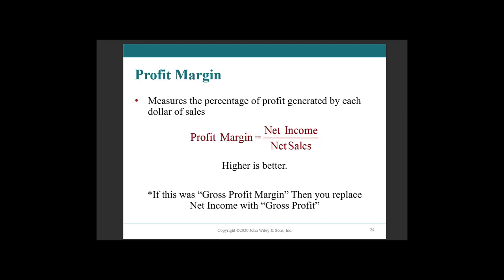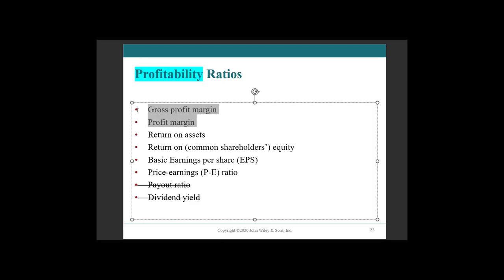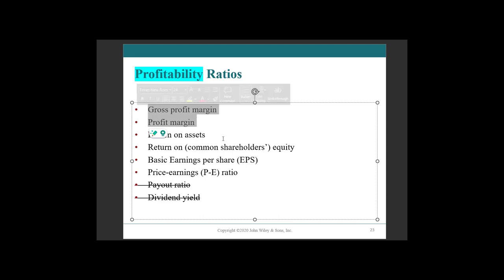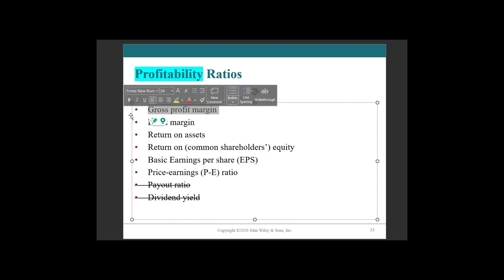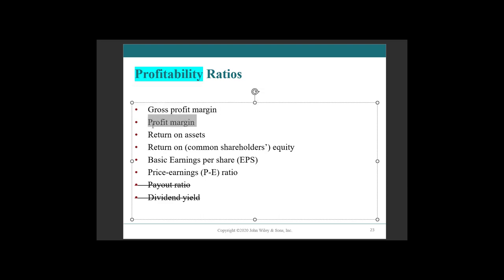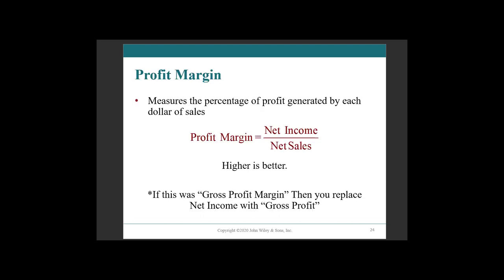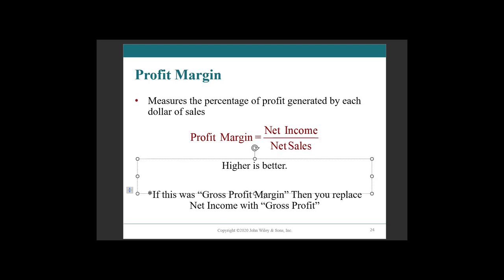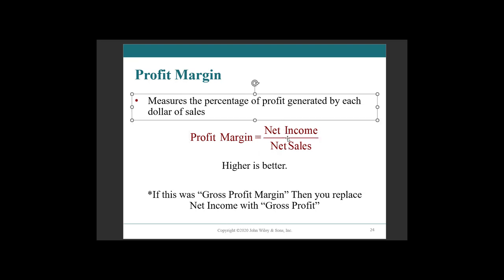So profit margins — this is the same whether we're looking at gross profit margin or profit margin. It just relates to where on the income statement. Are we right after revenues less cost of goods sold? If so, that's gross profit margin. Are we after operating costs? That is our net profit or profit margin. So here's where we take our net income and divide it by net sales. And if we were looking at gross profit, we would be looking at gross profit divided by net sales.